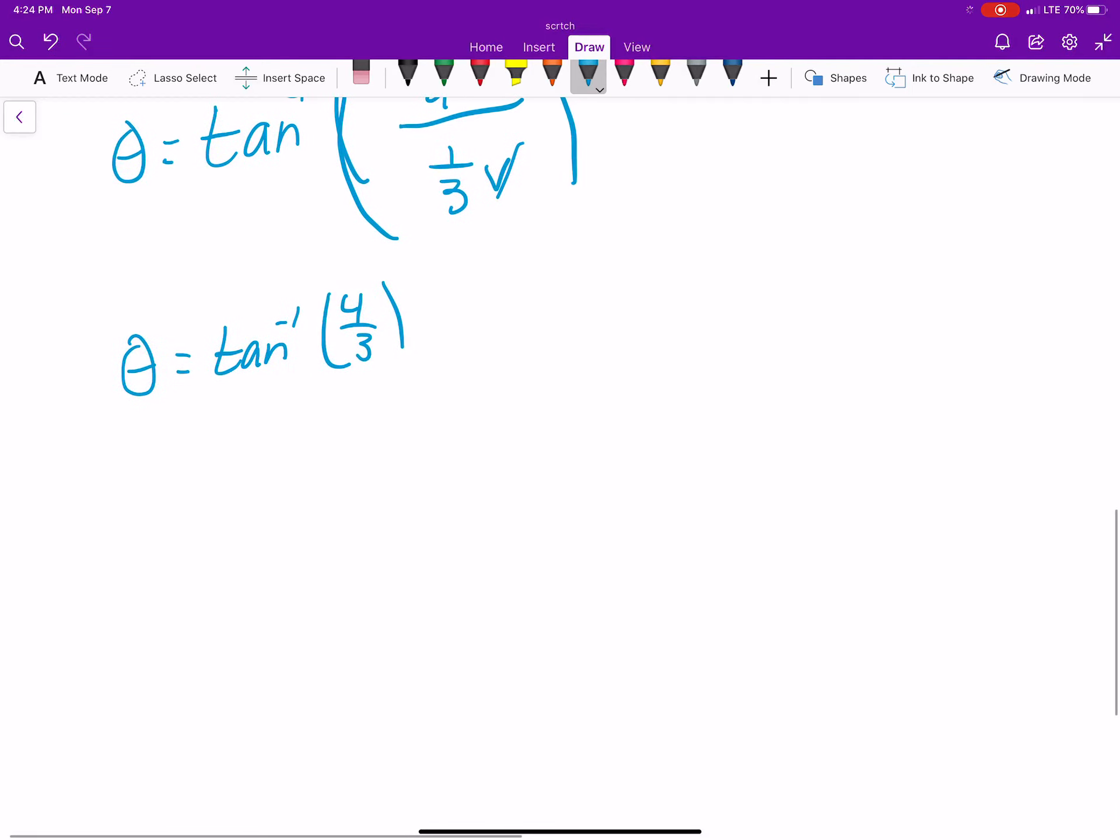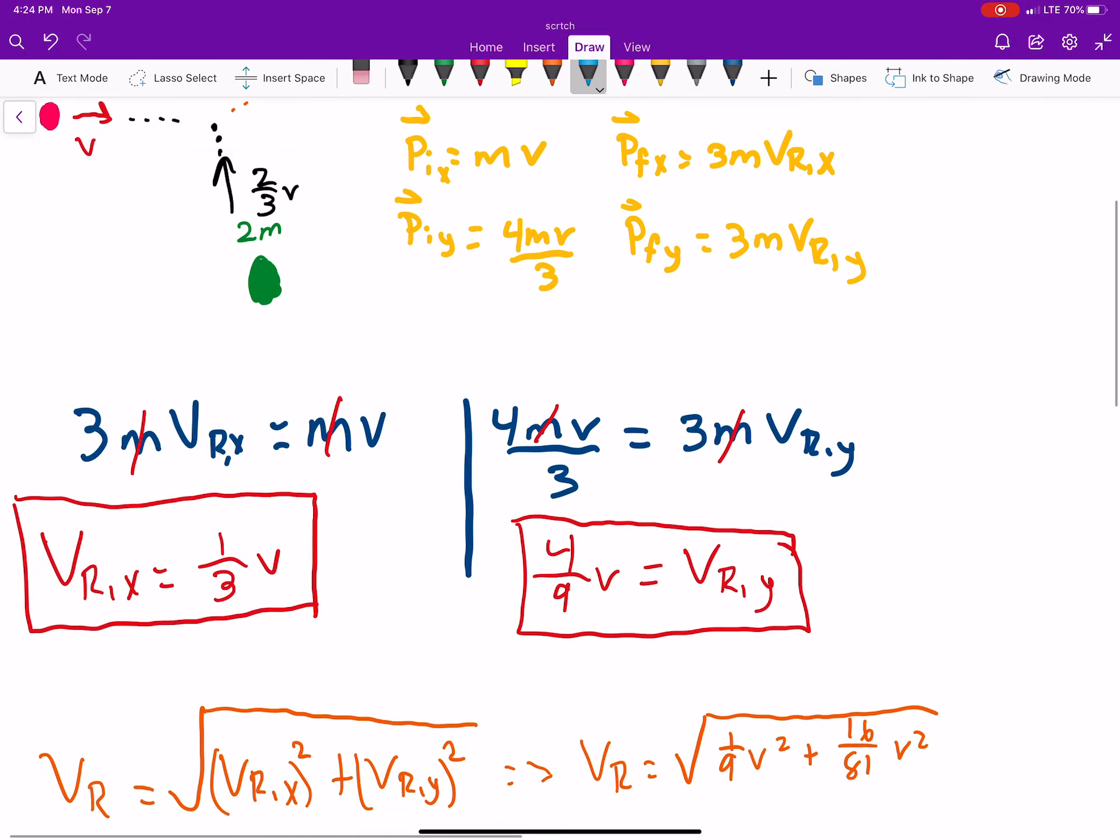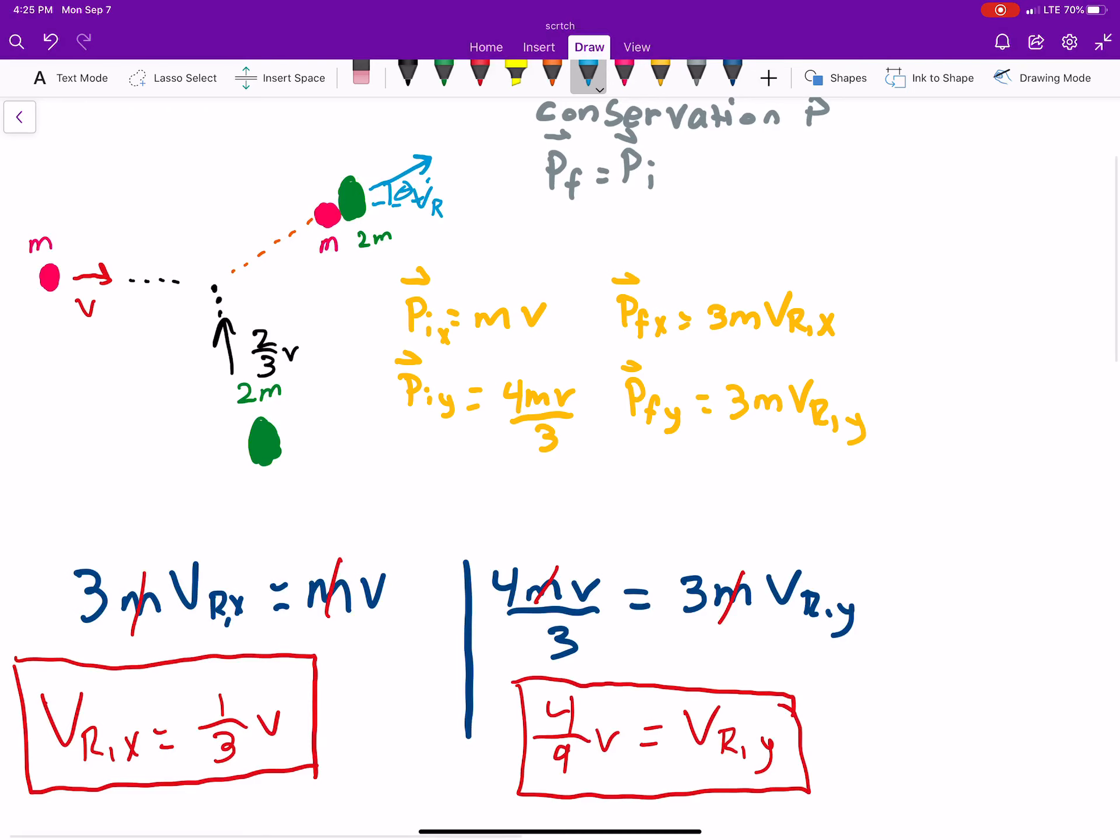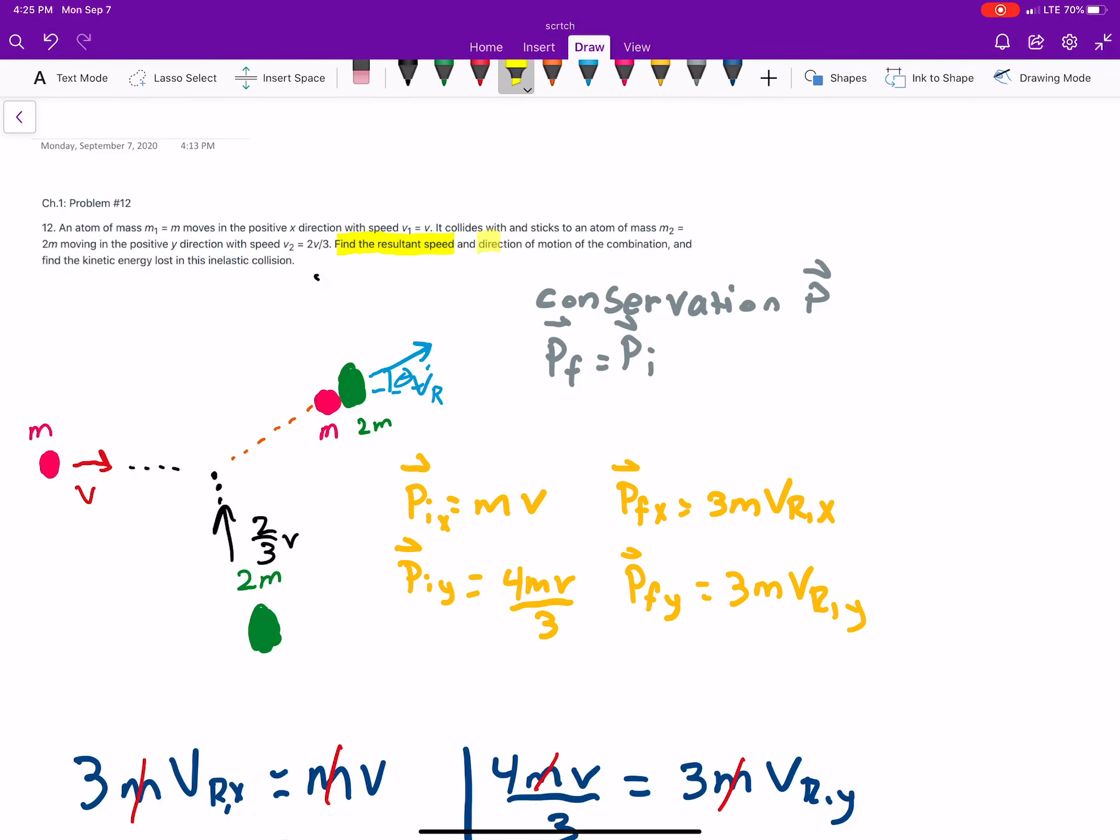53.13 degrees. And, that's your angle. So, we now know this, and we know the angle. So, the direction of motion of the combination.